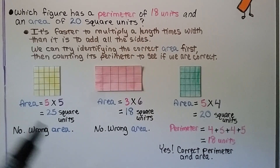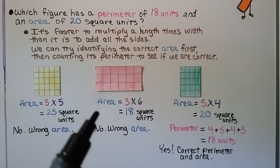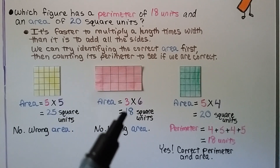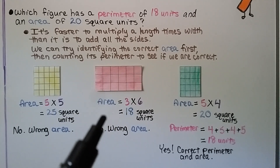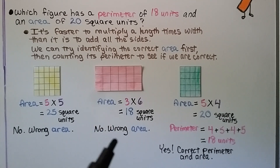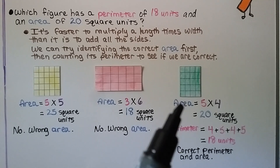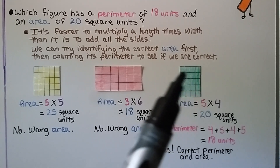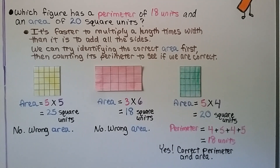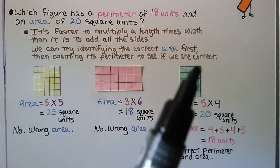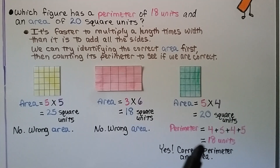If the area is wrong, we don't even need to check the perimeter. The green figure has a side of 5 and a side of 4 — length times width gives 5 times 4 equals 20 square units, so it fits for area. Checking its perimeter: 4 plus 5 plus 4 plus 5 equals 18 units. The figure with a perimeter of 18 units and an area of 20 square units is the green one.